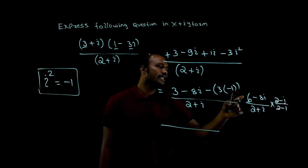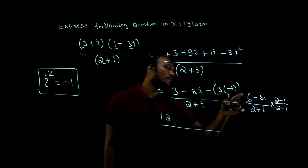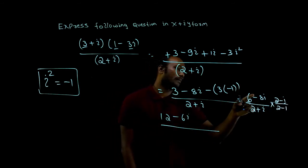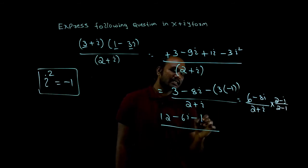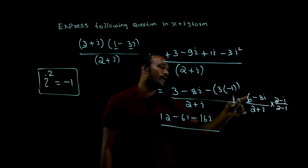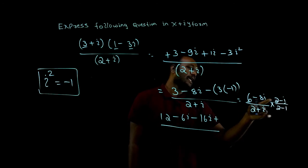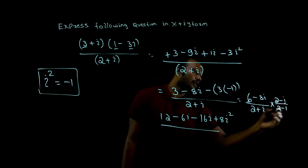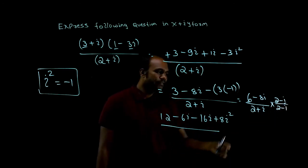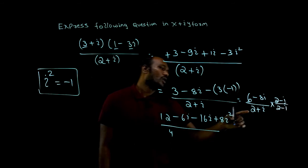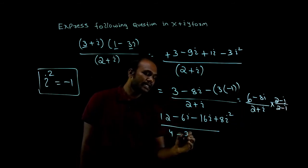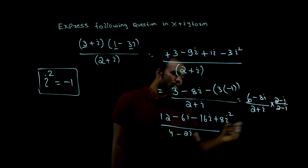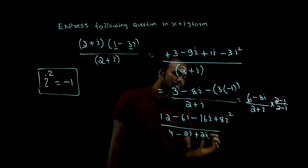So 6 into 2 is 12, plus into minus is minus, 6 into 1i is 6i. Next, minus into plus is minus, 8 into 2 is 16i. And minus into minus is plus, 8i into i, that is 8 i square. Divided by 2 into 2 minus i. 2 into 2 is 4, 2 into minus 1i is minus 2i. Next we have plus i, plus i into 2 is plus 2i, plus into minus is minus, i into i is i square.